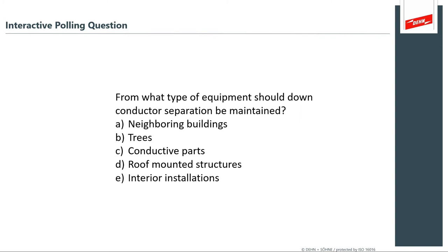From what type of equipment should down conductor separation be maintained? It should be maintained from neighboring buildings, trees, conductive parts, roof-mounted structures, and interior installations. The separation distance of your down conductor needs to be especially separate from roof-mounted chillers and compressor structures, and definitely separated from interior installations that you don't even see from the outside. In a data center, those hidden interior installations are in fact your most critical assets.